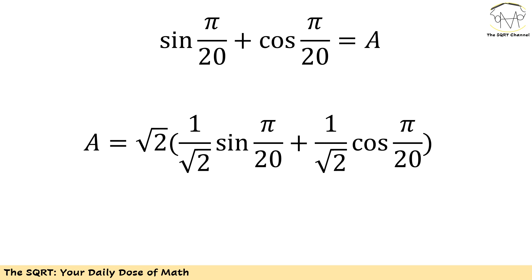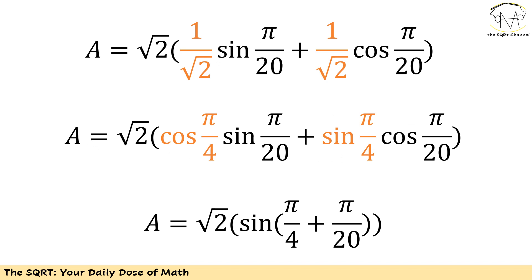So I'm going to end up with √2 times sine of π over 20 times (1 over √2) plus cosine of π over 20 times (1 over √2). The reason I multiplied by √2 and then divided by √2 is I want to replace this 1 over √2 with cosine and sine values that I know. I know that cosine of π over 4 is 1 over √2, and sine of π over 4 is also 1 over √2.